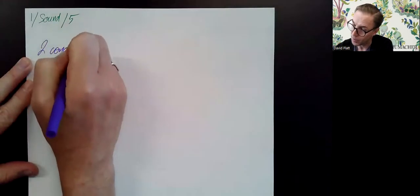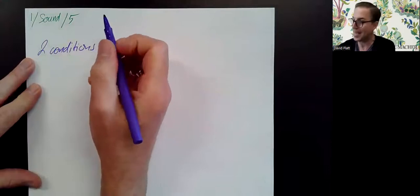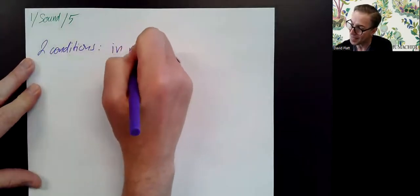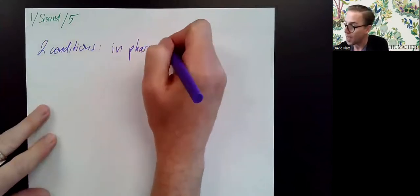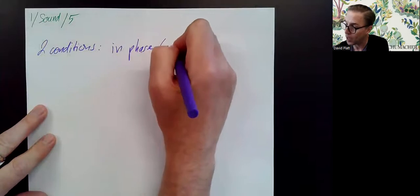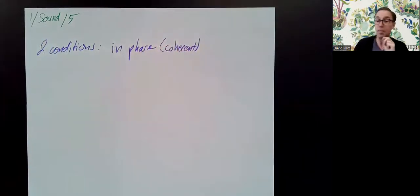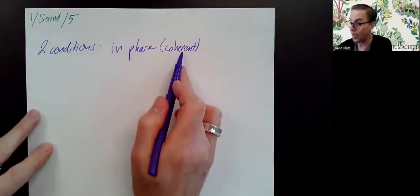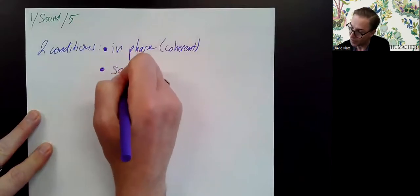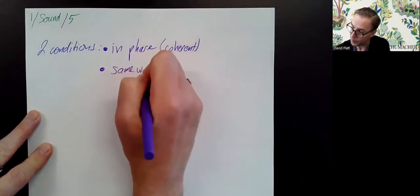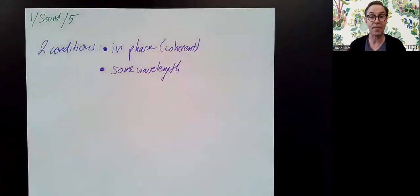Two conditions. My two waves have to be in phase, which means they both start with crests and then both go to troughs. Another word for that is coherent — so in phase or coherent. The other condition is they have to have the same wavelength, which for sound means they have to be the same pitch, the same note.